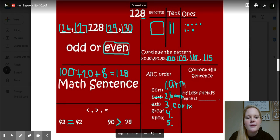Then we have great and know left. Which one would go first? A, B, C, D, E, F, G. G, right! So great: G-R-E-A-T. And then last we have know: K-N-O-W.